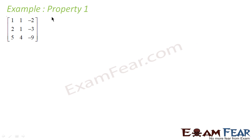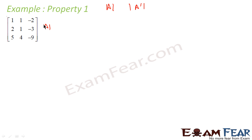Let's take an example for this property. For this property, we have a given matrix. We have to find its determinant and then find the determinant of the transpose matrix and prove they are the same.